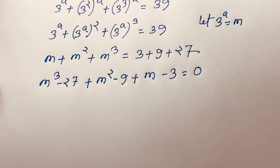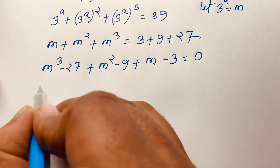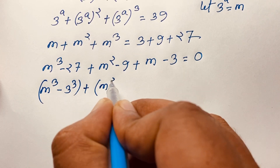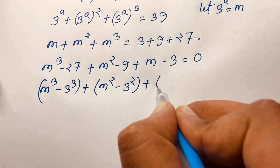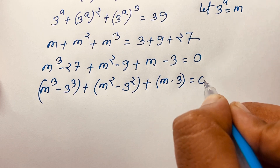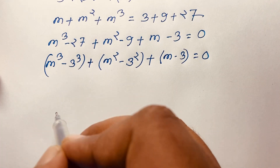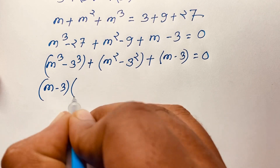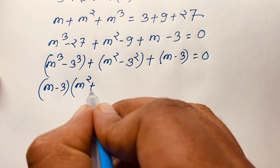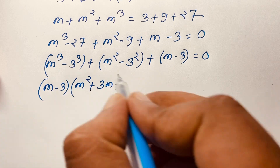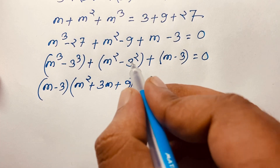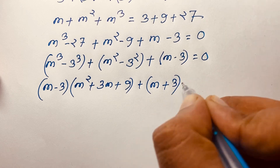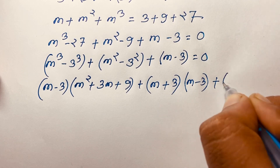Now, m cubed minus 27 is a difference of cubes, equal to (m minus 3)(m squared plus 3m plus 9). And m squared minus 9 is a difference of squares, equal to (m plus 3)(m minus 3). So the expression becomes: (m minus 3)(m squared plus 3m + 9) plus (m plus 3)(m minus 3) plus (m minus 3) equals 0.